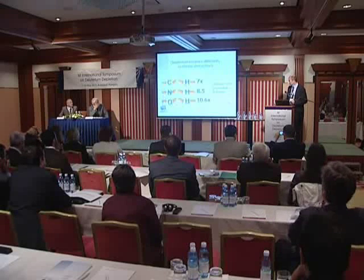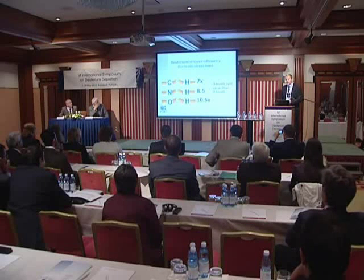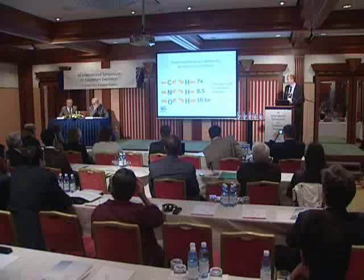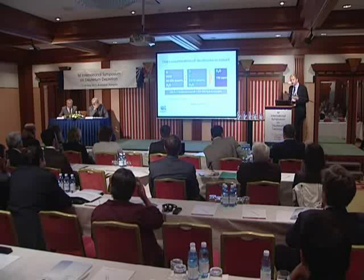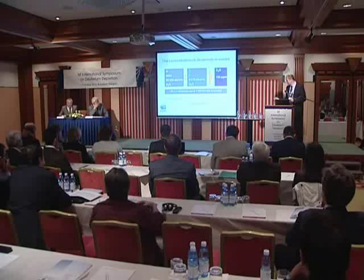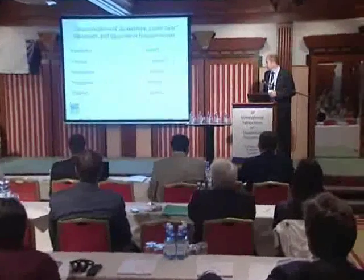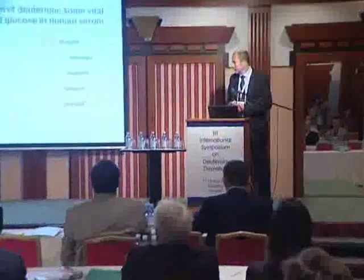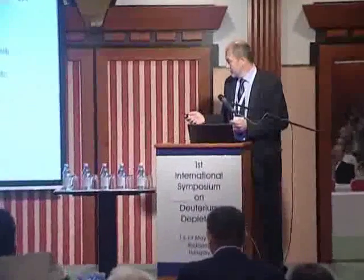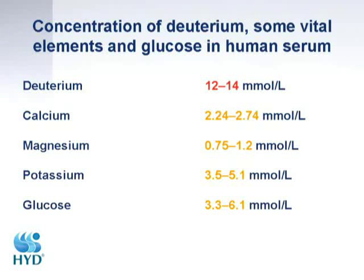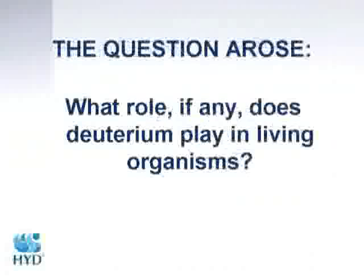Deuterium is a heavy hydrogen. Due to the 100% mass difference, hydrogen behaves differently in chemical reactions. In normal surface water, the deuterium concentration is about 150 ppm, which is equivalent to 16.8 millimole per liter. We can consider that the deuterium concentration in a living organism is 12–14 millimole per liter. Comparing it with calcium or magnesium concentration, the deuterium concentration is quite relevant. The question is whether deuterium has any role in living organisms.